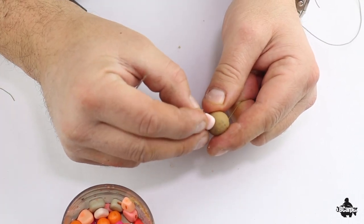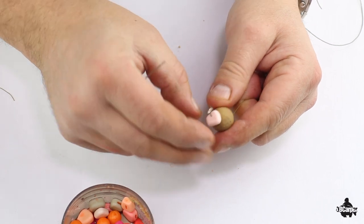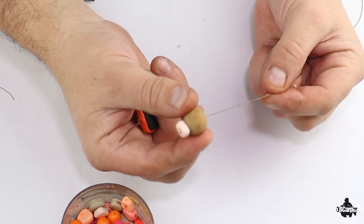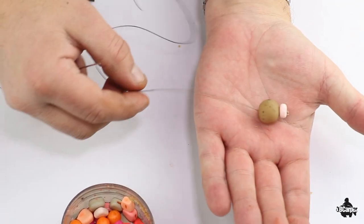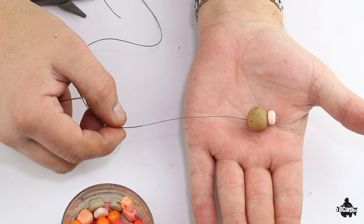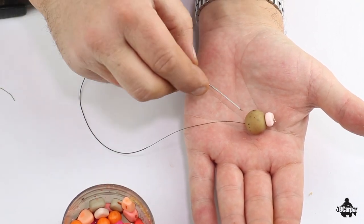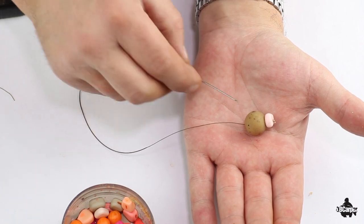A little bait stop on there also. Get him in there. Pull it tight down and that's your first stage completed. Now I always put on my bait first so I can tie up my hook, the length of the hair, so much more easier.